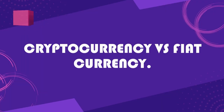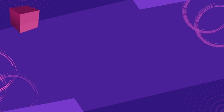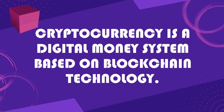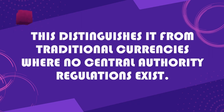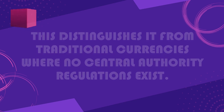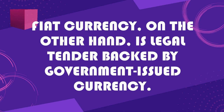Cryptocurrency versus fiat currency: cryptocurrency is a digital money system based on blockchain technology, distinguishing it from traditional currencies where no central authority regulates it. Fiat currency, on the other hand, is legal tender backed by government-issued currency.